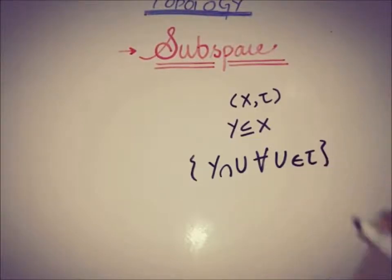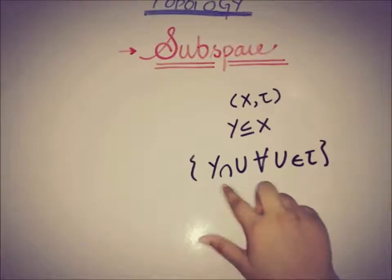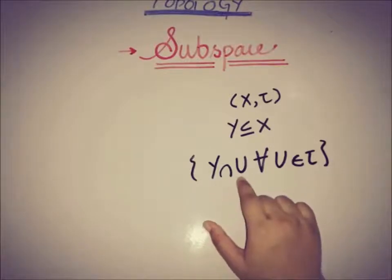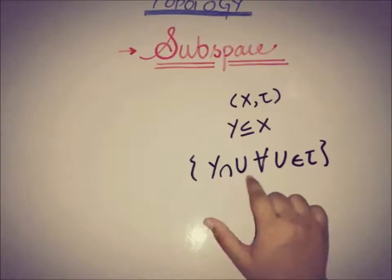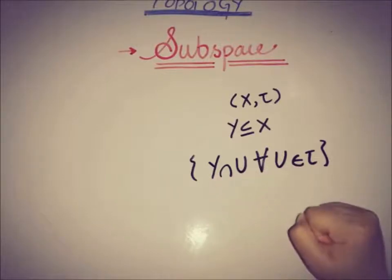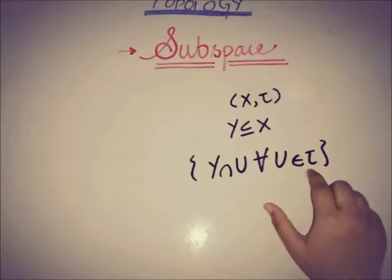This collection we have defined has elements of the form y intersection u, that is y intersection with the open sets of x or the elements of the topology.